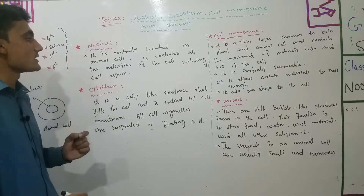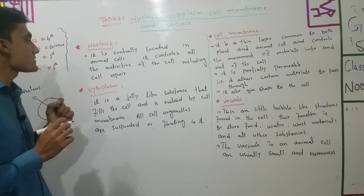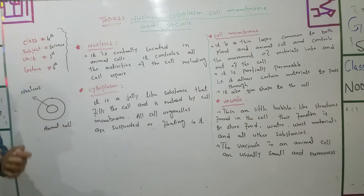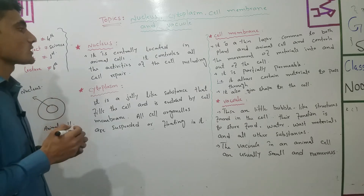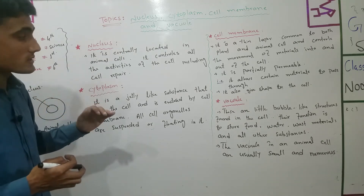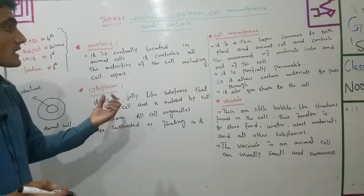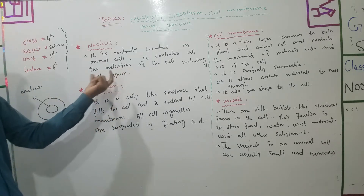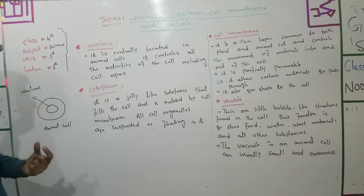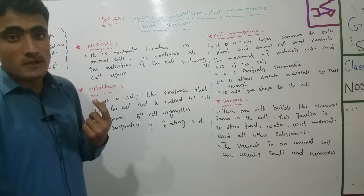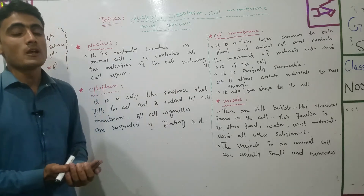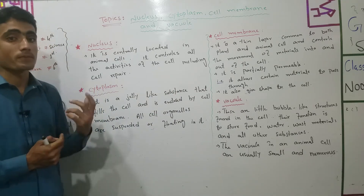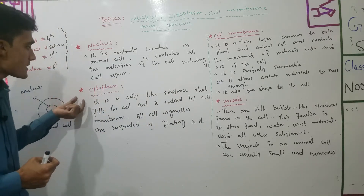The nucleus controls all the activities of the cell, including cell repair. All activities of the cell are controlled by the nucleus, including cell repair. Cell repair means when a cell is damaged, the nucleus controls the process. The nucleus also controls cell division.